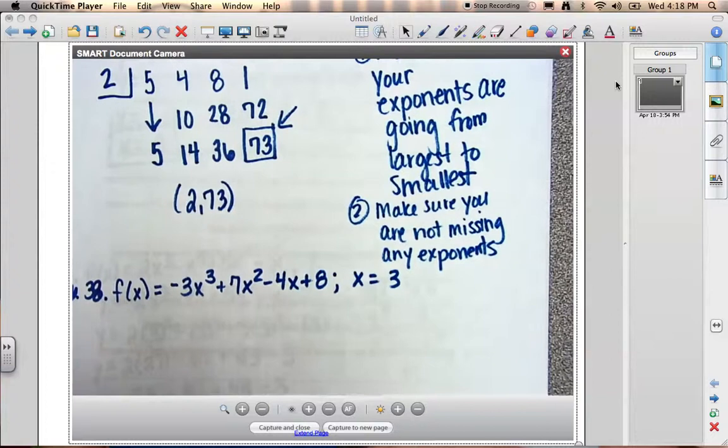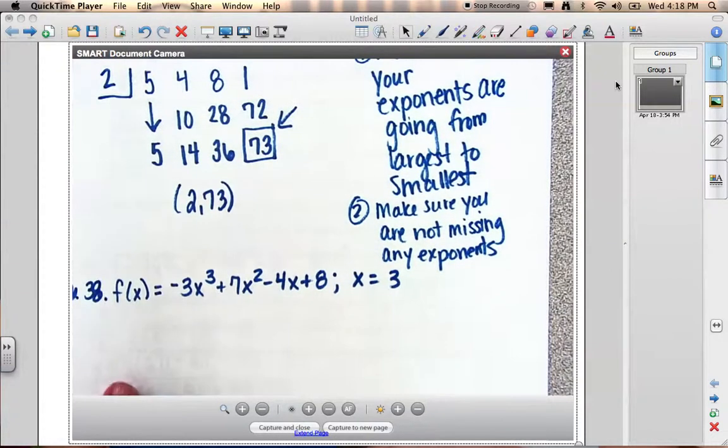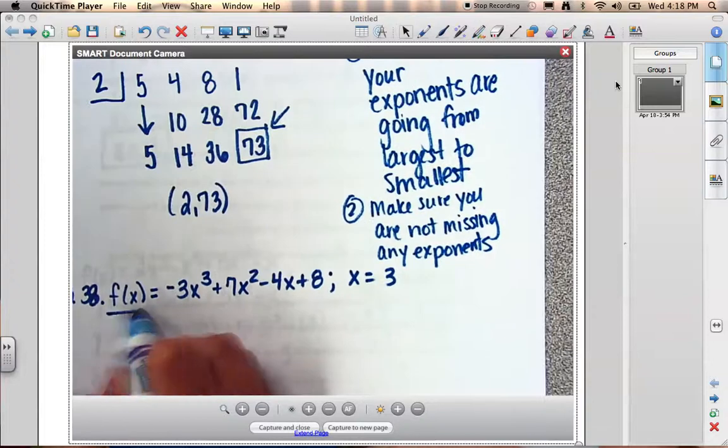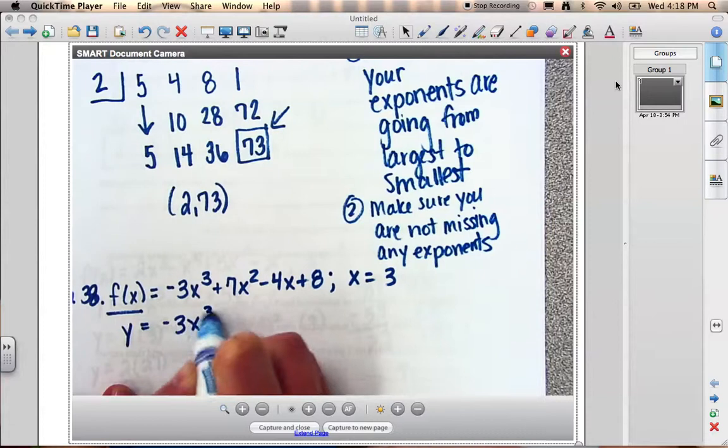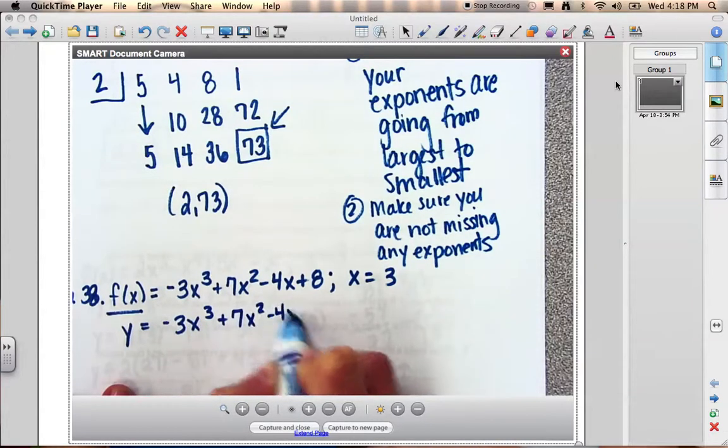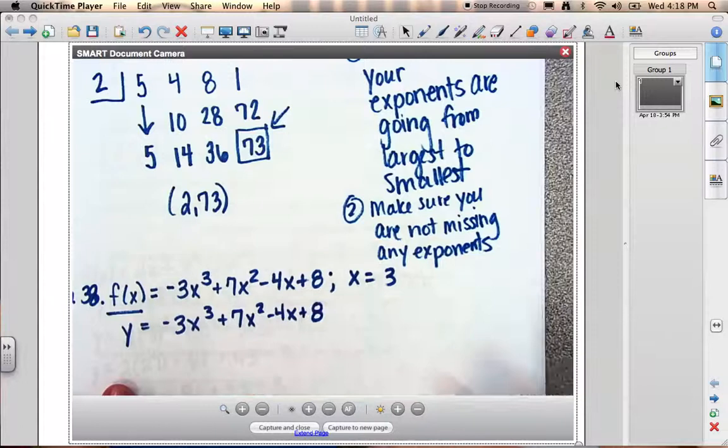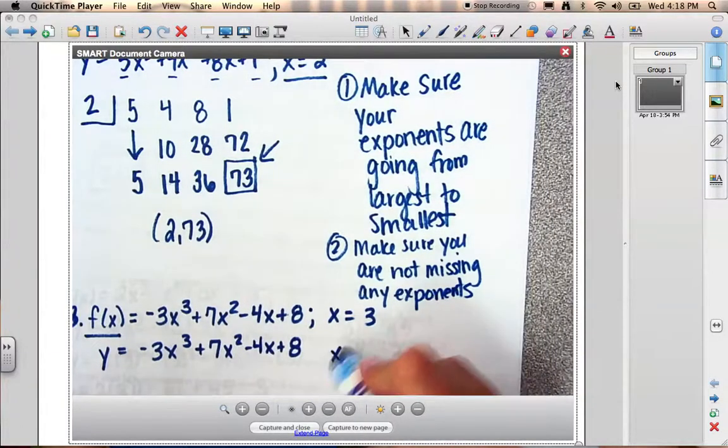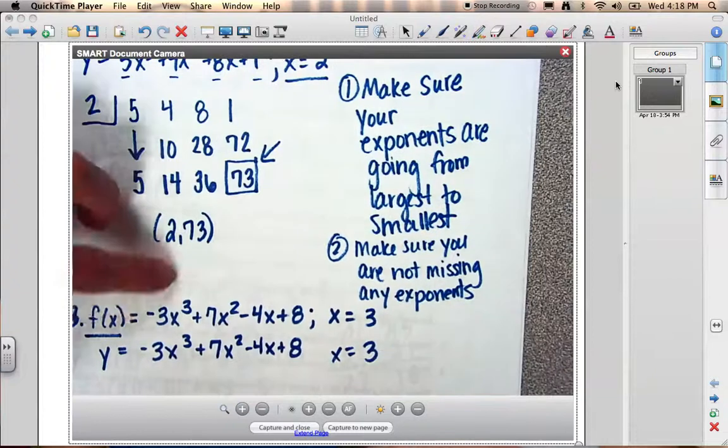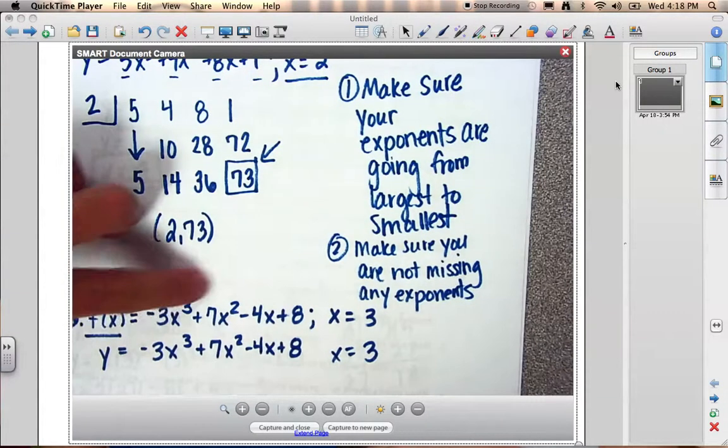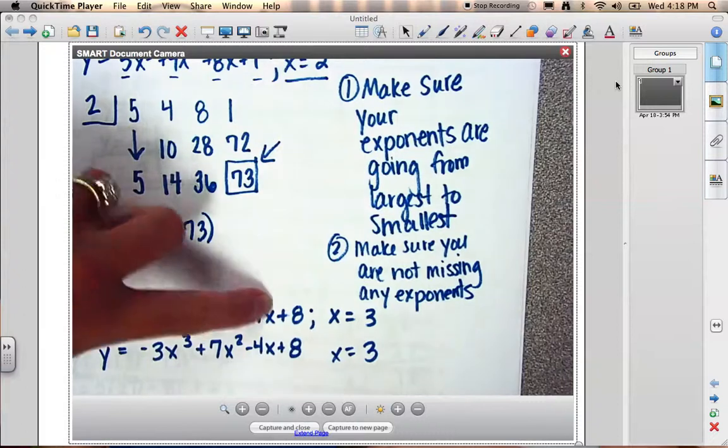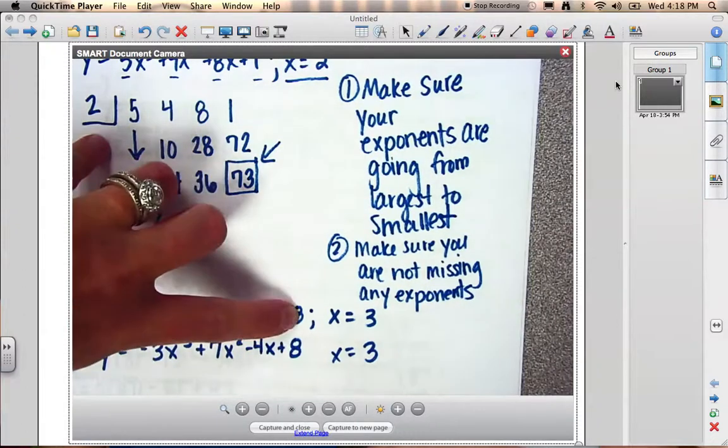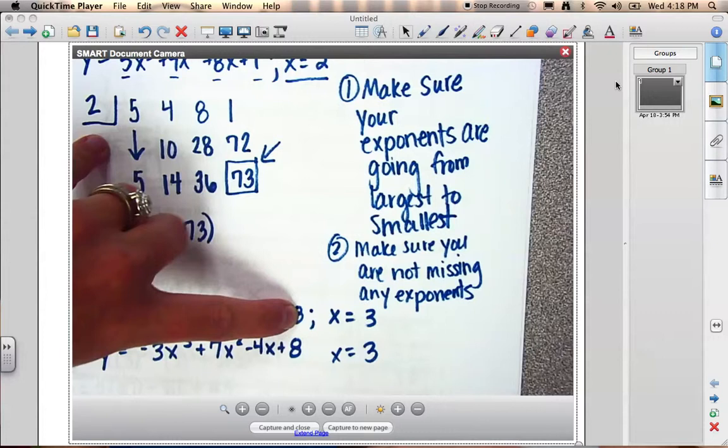Okay, now for the next problem, I'm going to do 38 on page 334. Once again, it started with this function notation, which is not a big deal. That's just our y. Okay, so to refer back to our steps for this, we need to make sure all your exponents are going from largest to smallest. So when I look at these exponents, I have a 3, followed by a 2, then a 1, and then nothing. So they are going in descending order.